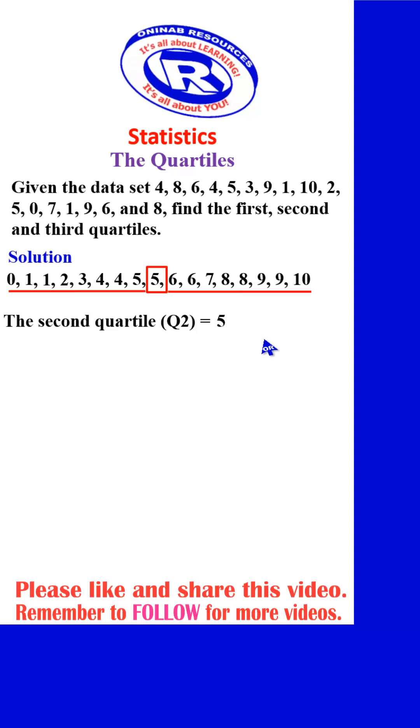We go with the first quartile Q1. We divide the 8 items on the lower side into two equal parts. 8 divided by 2 is 4, so we have the first 4 and the last 4, which means we have two numbers in the middle. We add the two numbers and divide by 2. So 2 plus 3 gives 5, 5 divided by 2 gives 2.5. The first quartile Q1 is 2.5.